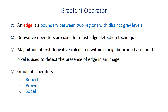Depending on what neighbors are being considered, the gradient operators are either Robert, Prewitt, or Sobel. We will be studying each of them in detail and then implementing all of them in MATLAB, and we will analyze the differences among all three gradient operators.